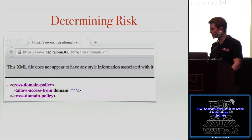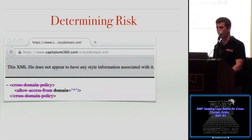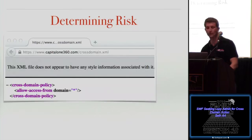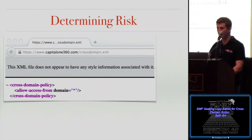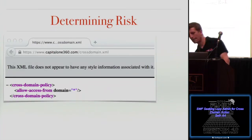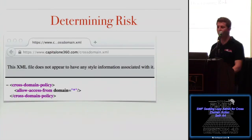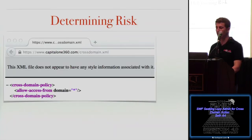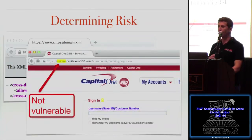A good example of those last two points is www.capital1360.com. It has a wide-open, fully trusting cross-domain.xml file, but all the sensitive information happens at secure.capital1360. Nothing sensitive happens on www, so there's no risk.